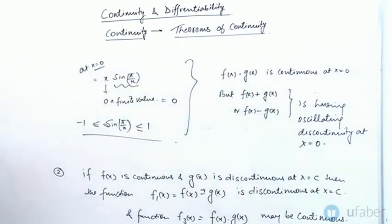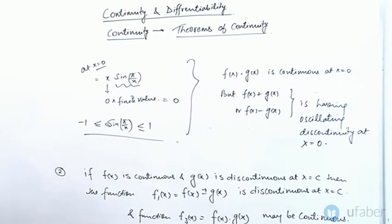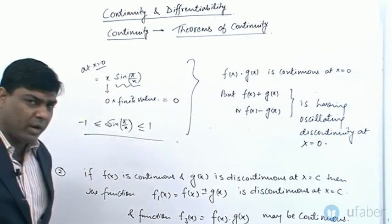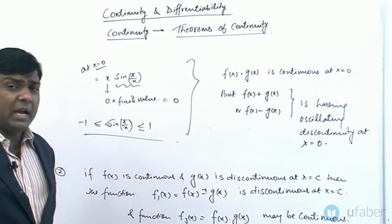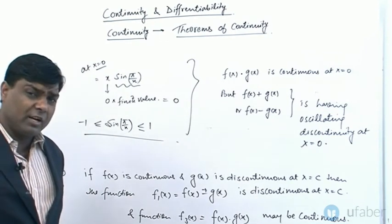So we can say that f(x)+g(x) or f(x)−g(x) may not be defined, but f(x)·g(x) is continuous at x equal to 0. This is why we say the product may be continuous — not that it always will be.